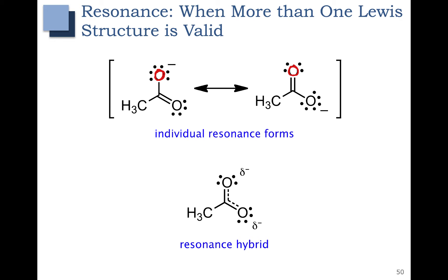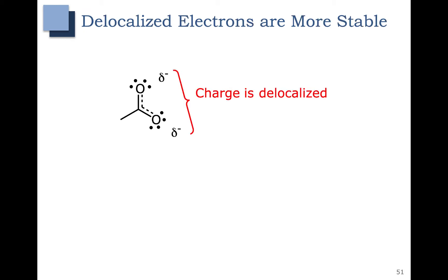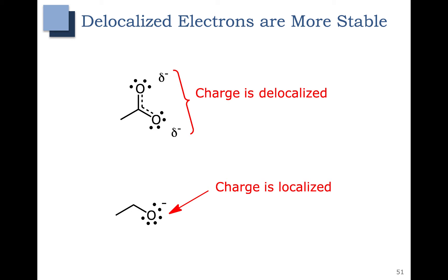Remember this isn't the true picture. Really that negative charge is spread out over both, and this is what the molecule really looks like. Another way to say the negative charge is shared over both oxygens is to say the charge is delocalized. A localized charge is on only one atom; a delocalized charge is spread out over multiple atoms. Delocalized charges, or delocalized electrons, are more stable. Anytime we have resonance or delocalized electrons, this is a more stable system.